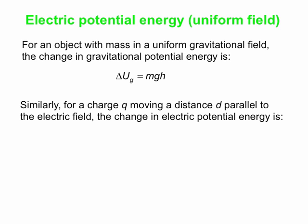Similarly, we're going to replace mass by charge Q, and replace G by E, the electric field. We can use D for our distance, but the D here is the distance that the object is moved parallel to the electric field — just like H is the distance moved parallel to the gravitational field in the object-with-mass situation.